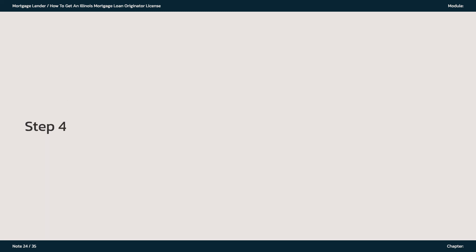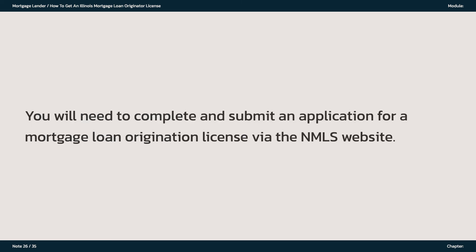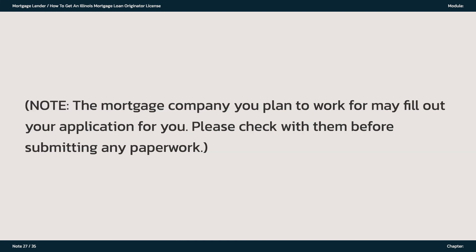Step 4: Apply for a License. You will need to complete and submit an application for a mortgage loan origination license via the NMLS website. Note: the mortgage company you plan to work for may fill out your application for you. Please check with them before submitting any paperwork.